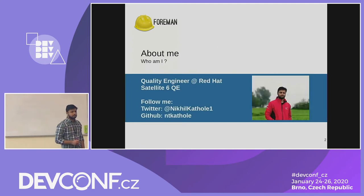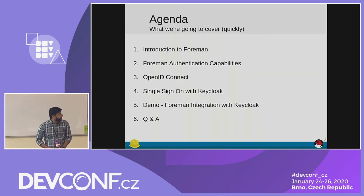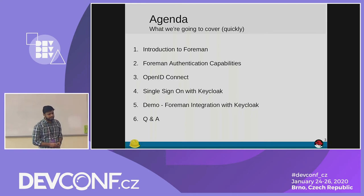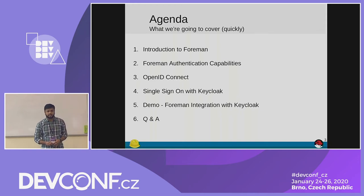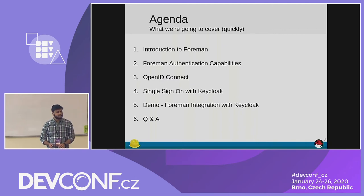Just a few words about me. I work as a quality engineer for Satellite 6 at Red Hat. This is the agenda for today: we will have a short introduction to Foreman, we will see some existing Foreman authentication capabilities, we will also look into single sign-on with Keycloak and OpenID, and finally we will see the Foreman and Keycloak integration with a demo. And last but not least, it's question and answer.